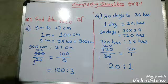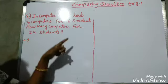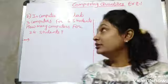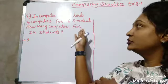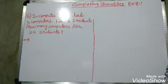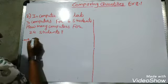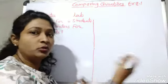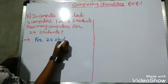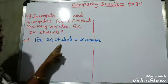Now let's move to our second question: In a computer lab, there are 3 computers for 6 students. How many computers are needed for 24 students? We can solve this by ratio method or unitary method. We don't know the number of computers for 24 students, so let's call it X.